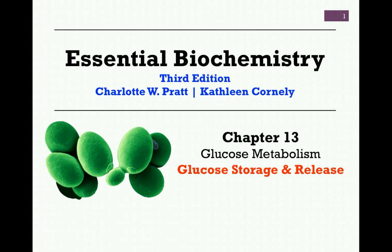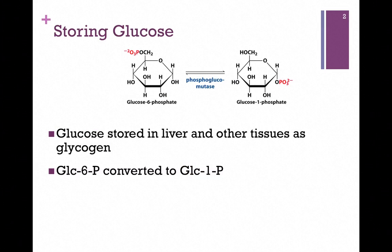As we continue our studies of glucose metabolism in Chapter 13, let's now turn our attention to the storage and release of glucose. Recall that we store glucose in the form of the polymer glycogen, a highly branched molecule. The primary storage facility is in the liver, but it can also be stored in other tissues, primarily muscle.